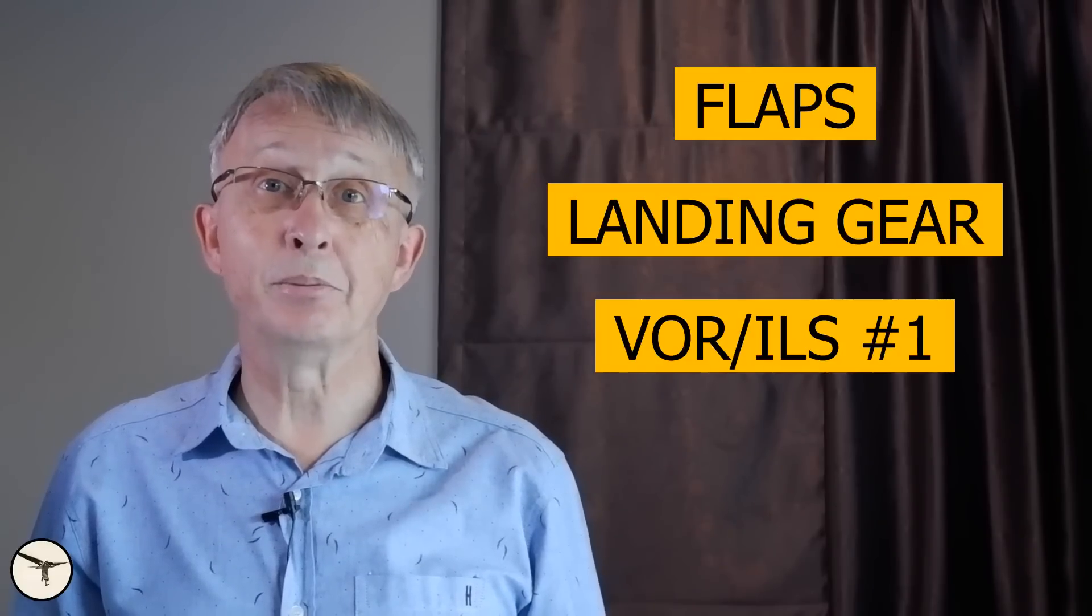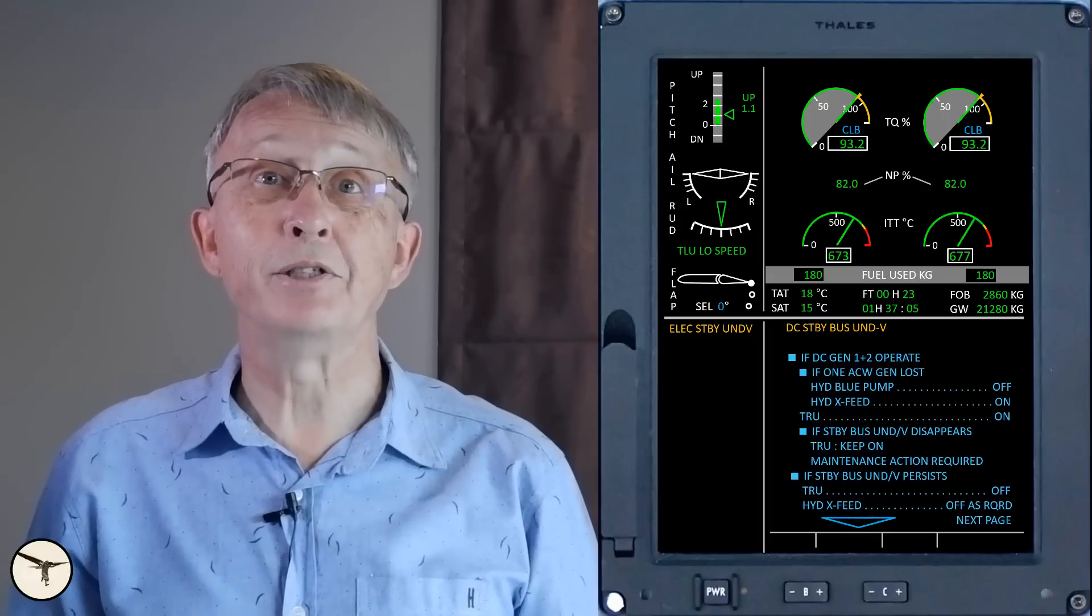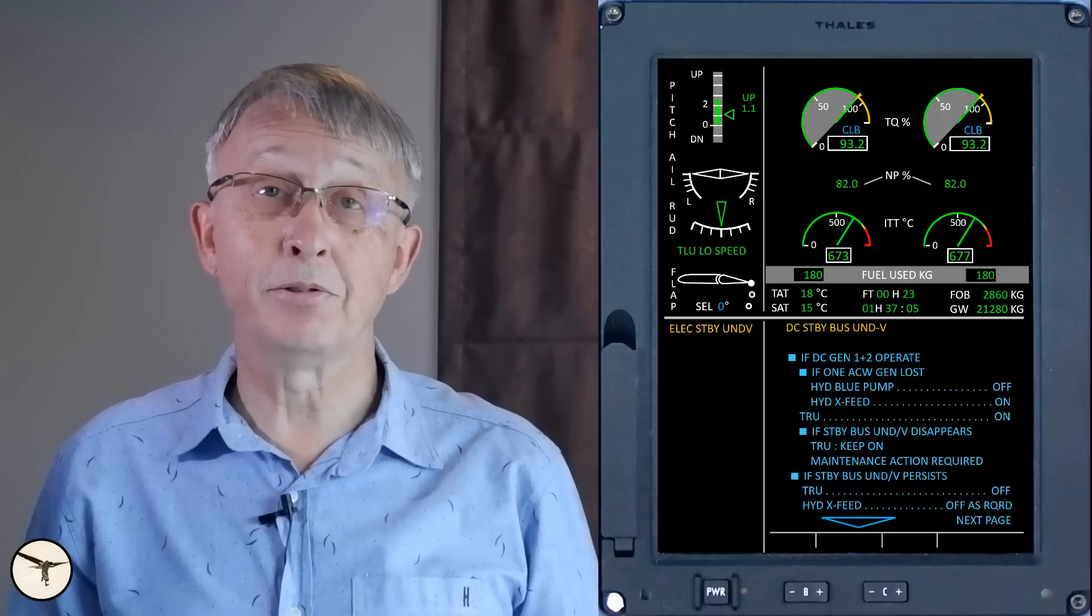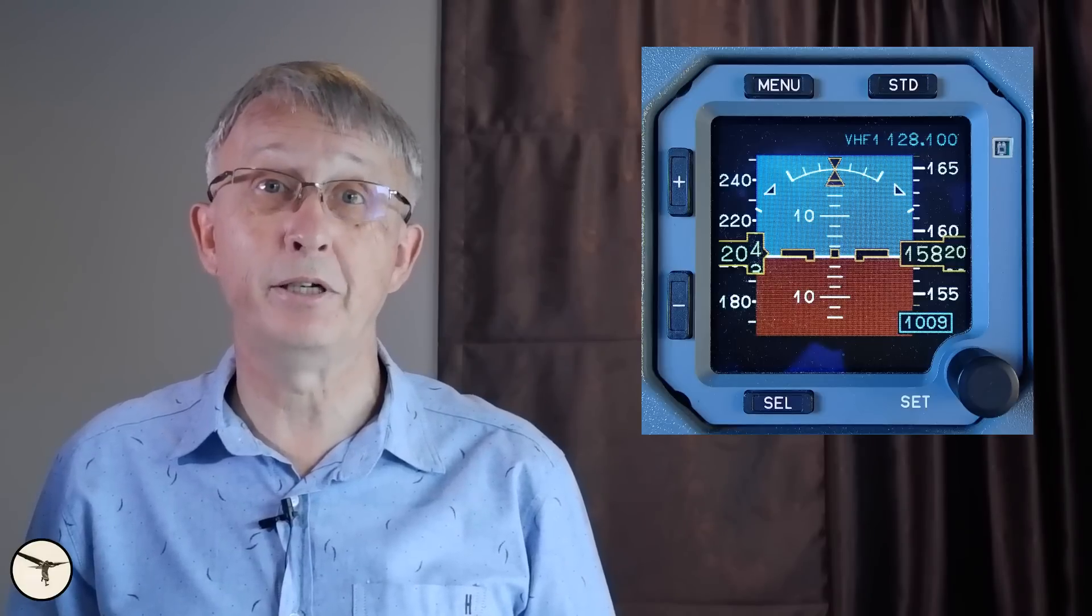Loss of the standby bus resulted in loss of flap control, landing gear control, VOR ILS number one, and GPS number one. The indications on the engine warning display appeared to be frozen, and they could not use the electronic checklist. As you can understand, the stress level in the cockpit increased rapidly. By cross-checking with the standby instruments, the captain confirmed the remaining information on his primary flight display was reliable.